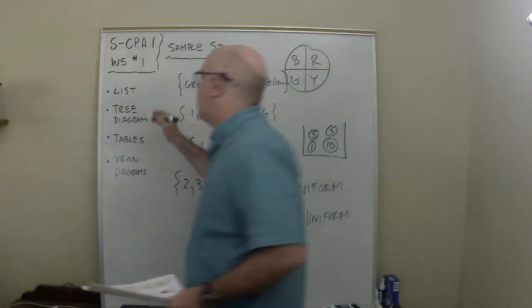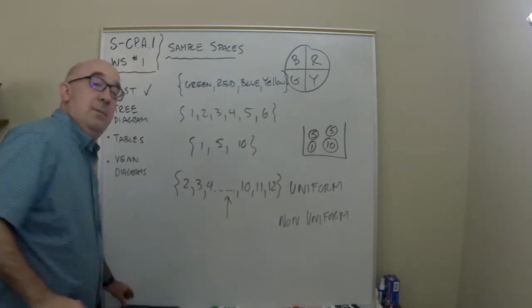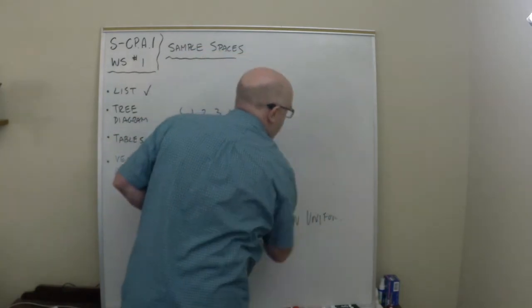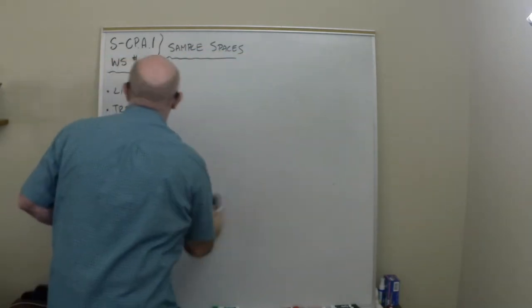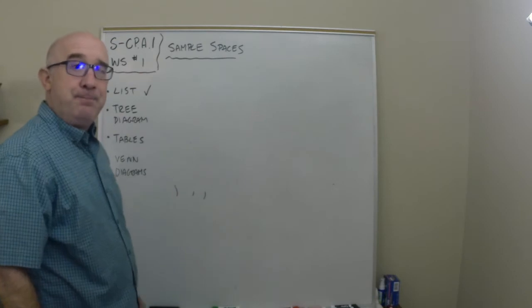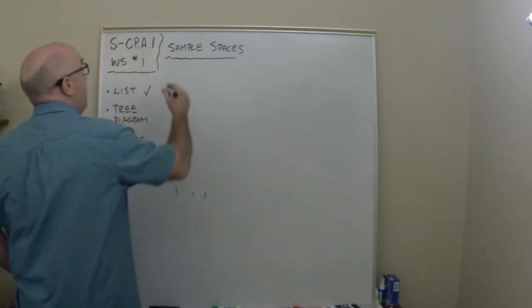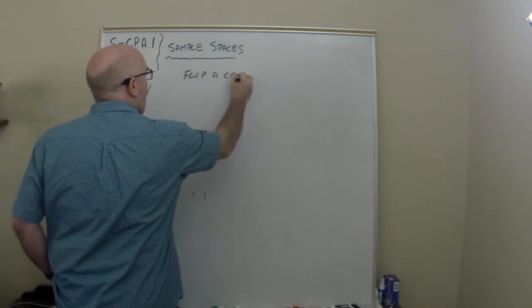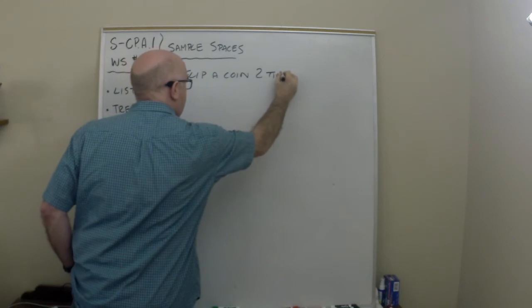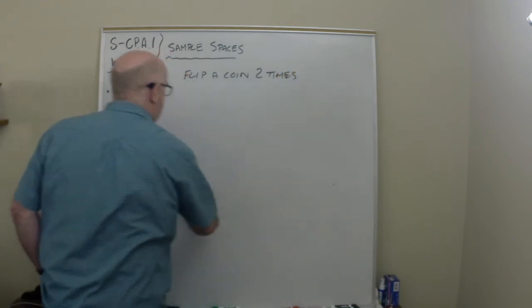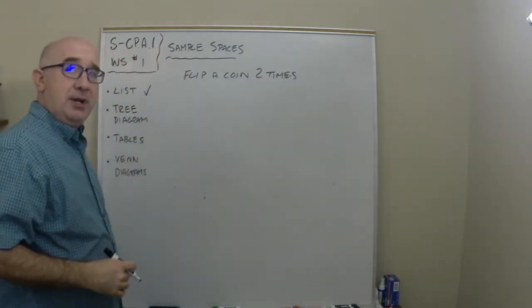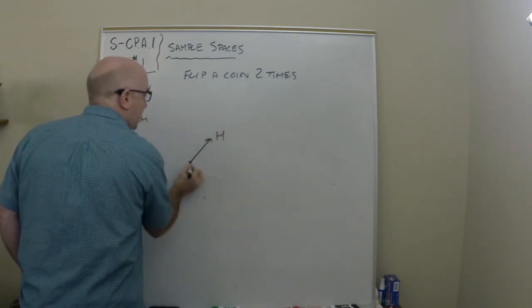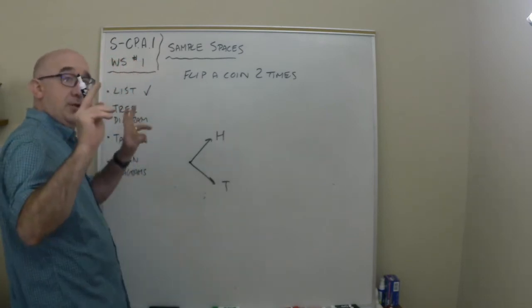Now other things, so this is listing them out. Sometimes to get a list of items or to get all of the sample space we will draw a tree diagram. So let's think about flipping a coin. So let's flip a coin twice, two times. Now, I'll come back to listing in a second, but the way you can think about it is you could say, well what happens first? I could get a head or I could get a tail. That's kind of the first flip.